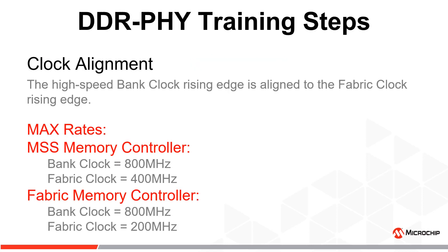The high-speed bank clock is the master clock of the DRAM interface. In this clock alignment step, it is aligned to the low-speed fabric clock rising edge. This provides clean transfers between the DRAM and the memory controller clock domains.